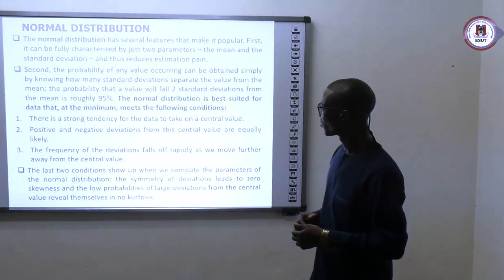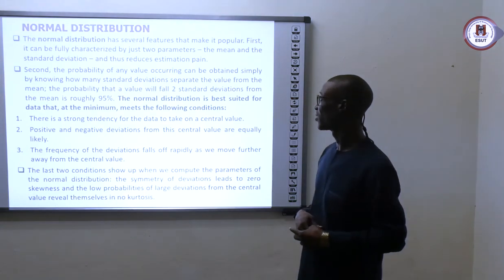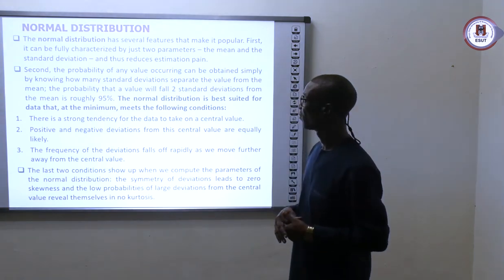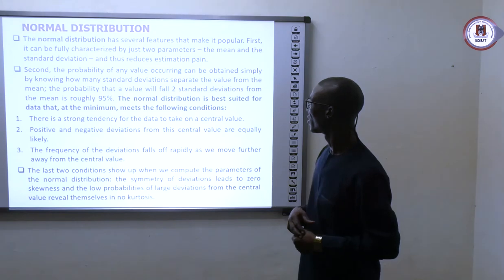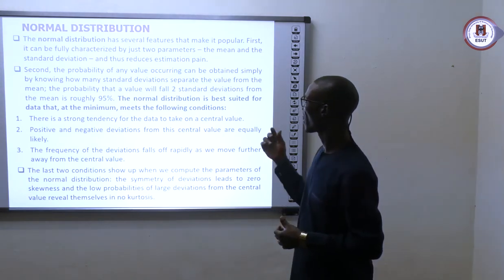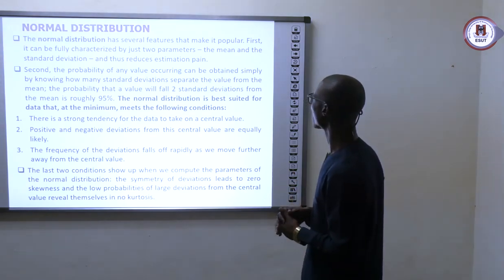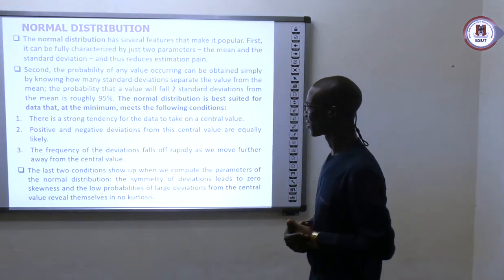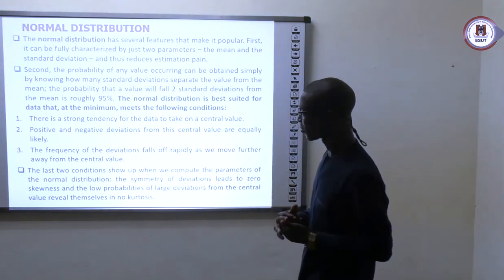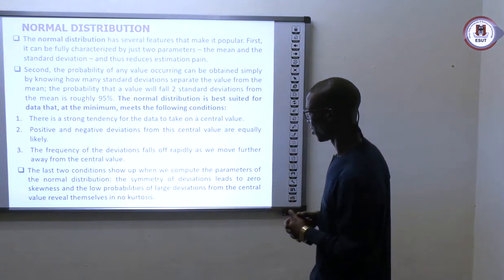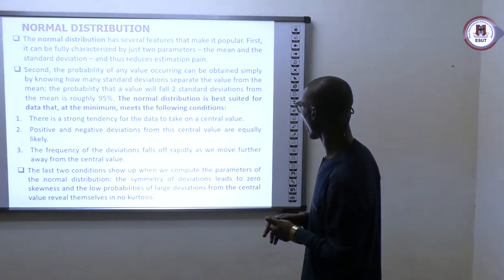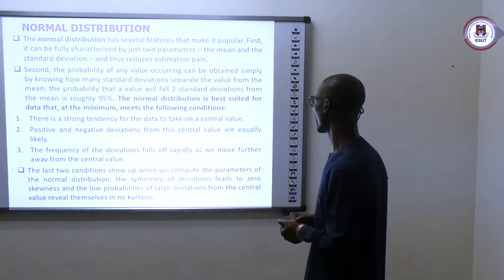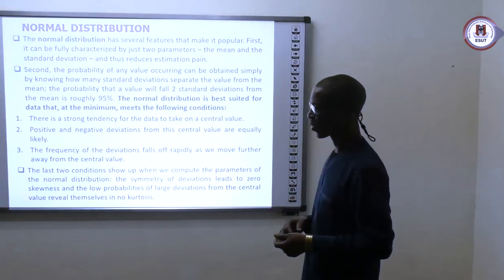Let us look at normal distribution. Any distribution that has equal variance and zero mean is normally distributed. The normal distribution has several features that make it popular. First, it can be fully characterized by just two parameters: the mean and the standard deviation, which is derived from the variance. This makes estimation simple. Second, the probability of any value occurring can be obtained simply by knowing how many standard deviations separate the value from the mean — that is one of the simplest properties of this distribution.